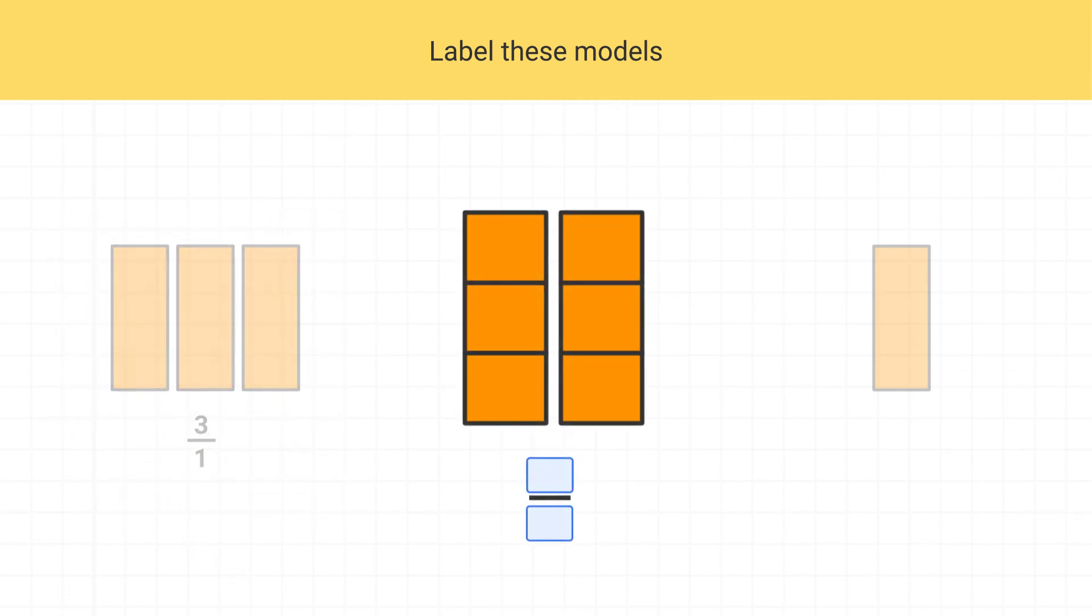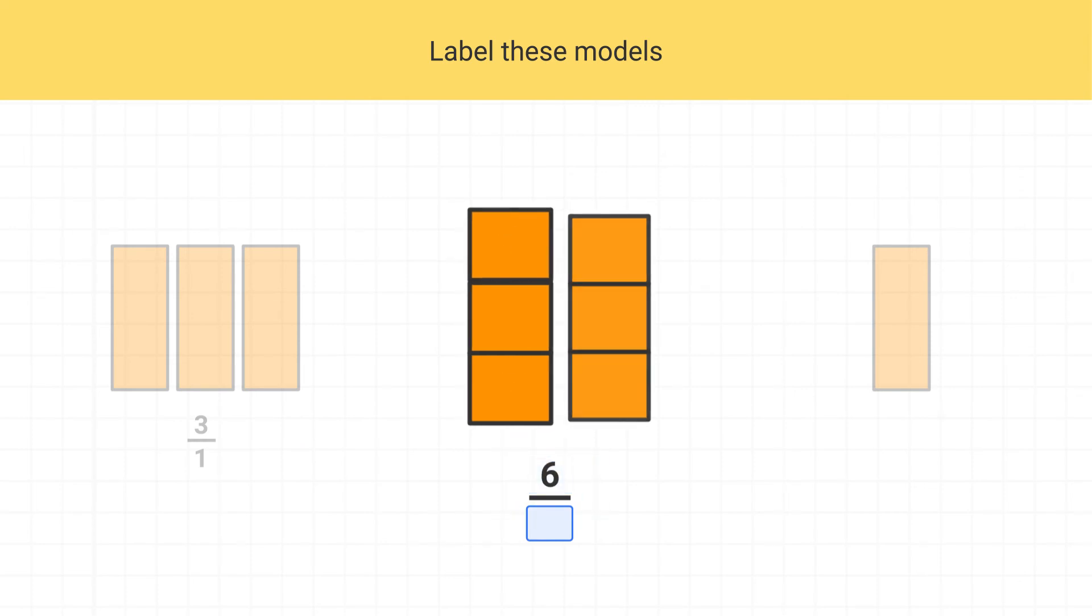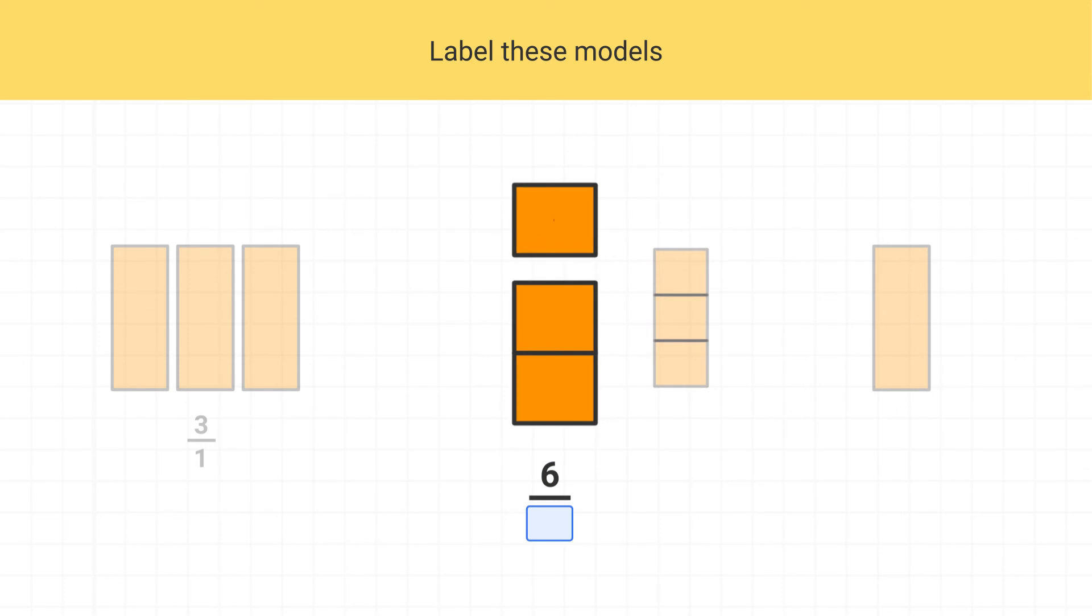Now how can I label this model? Well, there's 6 shaded pieces here, so the numerator is 6. And if you look at each piece, you see it's 1 third of a rectangle. So this is 6 thirds.